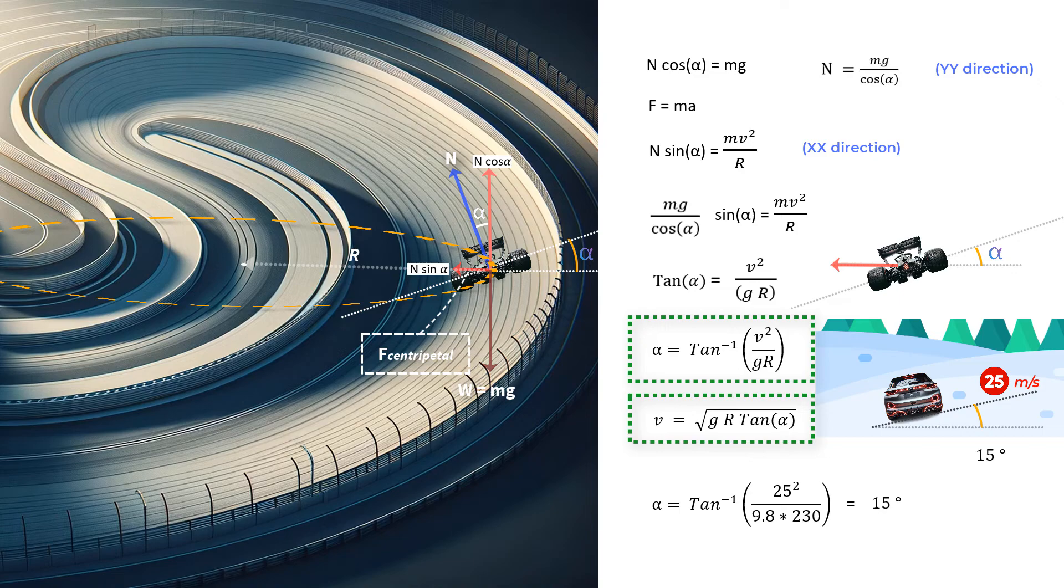In other words, if you are on a track that curves such that the radius is 230 meters, and the angle of banking is 15 degrees, then you just cannot afford to move at any speed more than 25 meters per second.